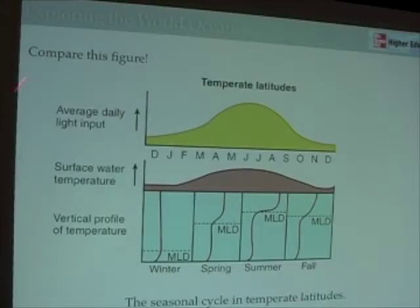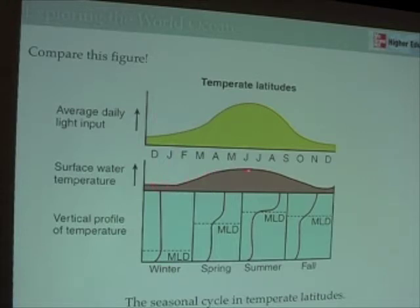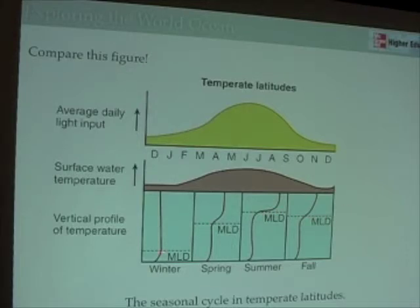Here's a way of looking at this process at different places on earth. We're now going to look at temperate latitudes. Take a look at this figure — this is the average light input from December through the following December, so through the year sunlight is increasing and decreasing. As sunlight increases and decreases, we see the temperature of the surface water goes up and down, and we see that the level of the thermocline, shown here in the dotted line, also changes.